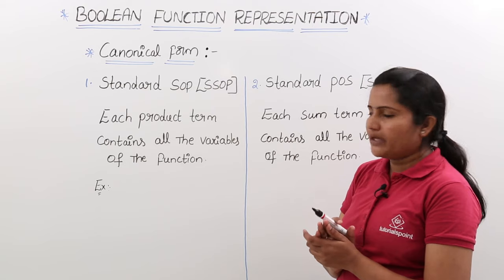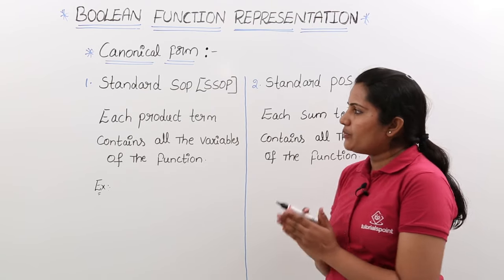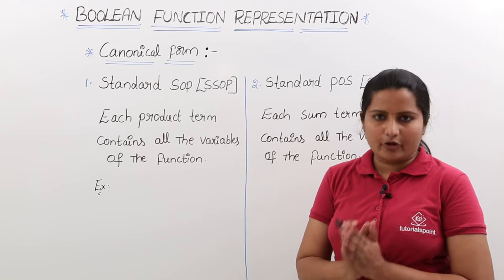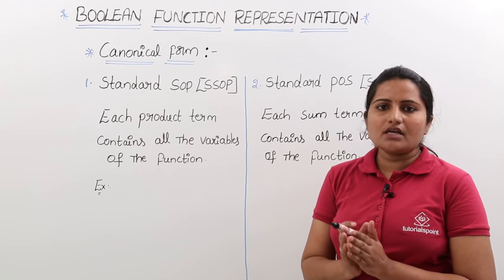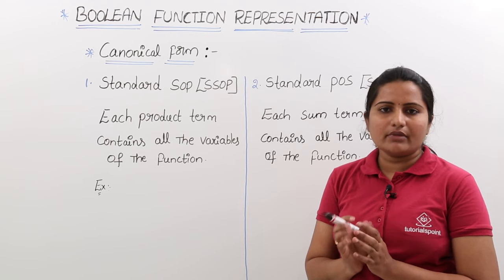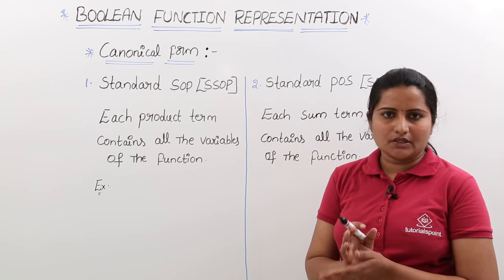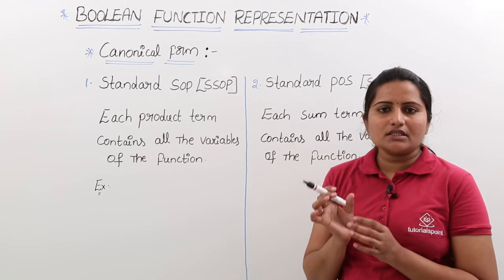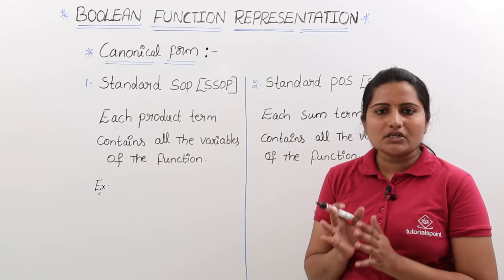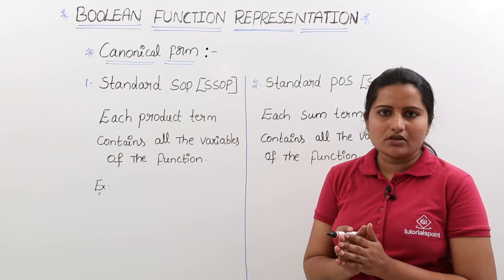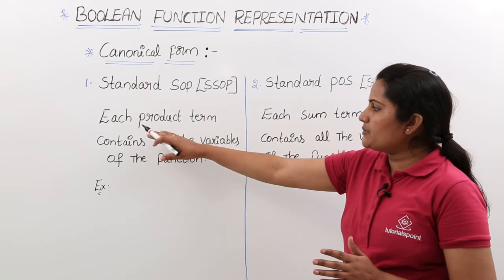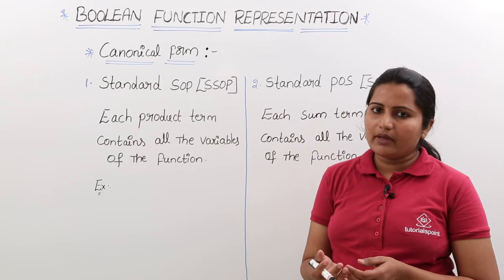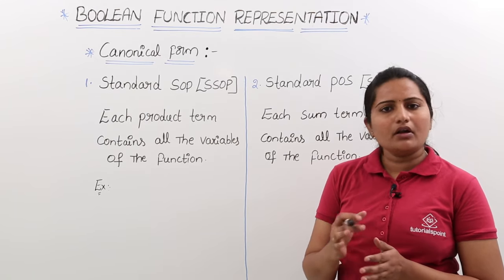Now we will discuss about the standard SOP. We know about SOP — that means sum of products — where all product terms are summed together. But what is meant by standard SOP? Whatever product terms are there, those product terms must contain all the variables, or all literals. Each product term contains all the variables of the function — the variable may be the actual variable or its complement.